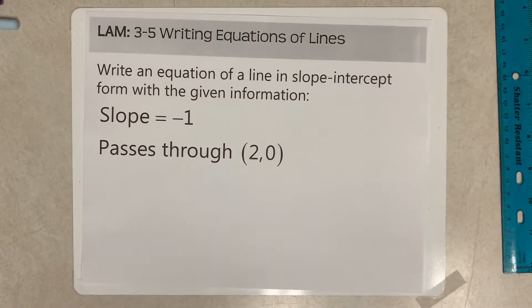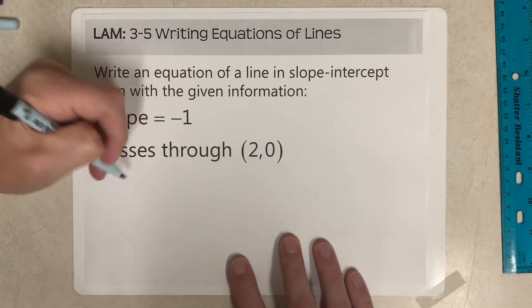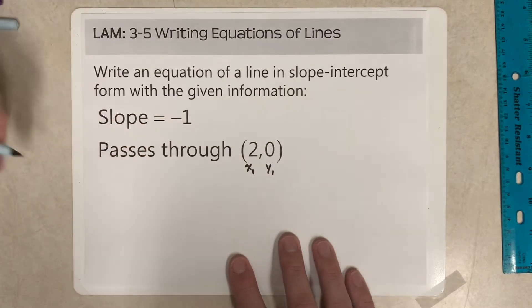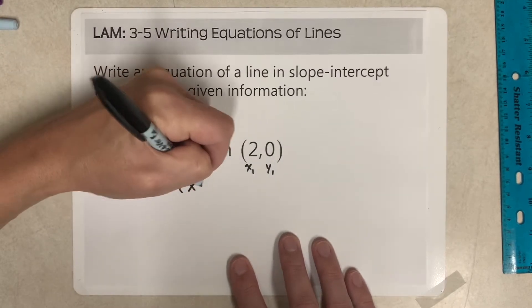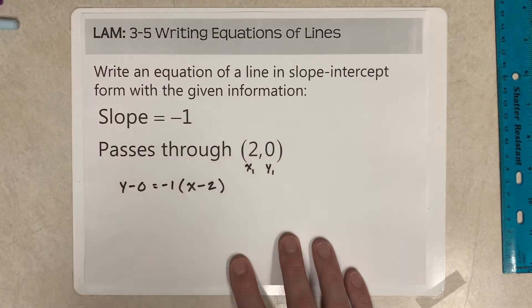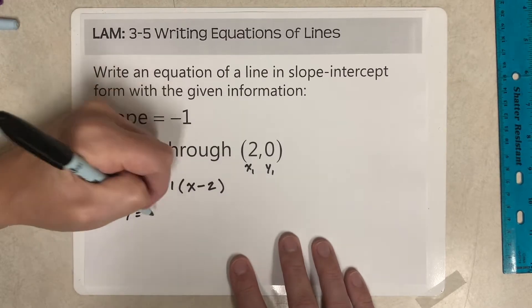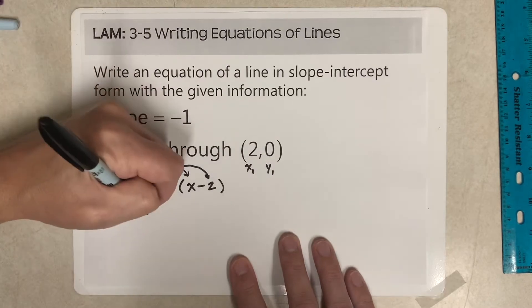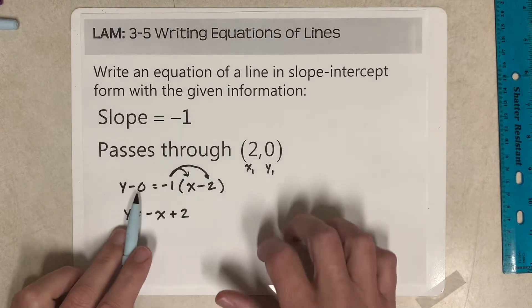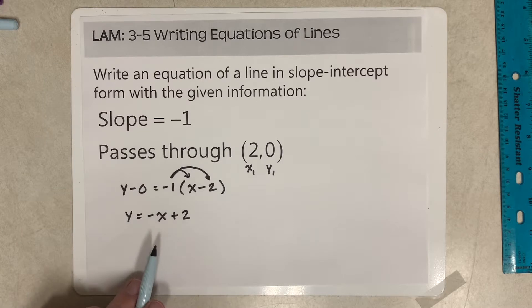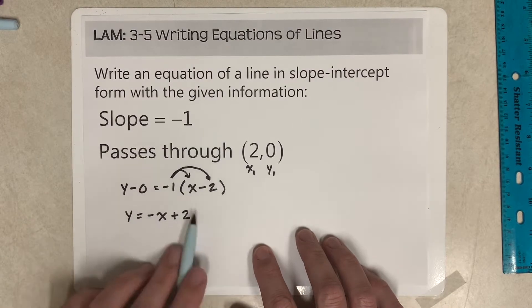Next example: slope of negative 1 passing through (2, 0). We've got y minus 0 equals negative 1 times (x minus 2). We don't even need the minus 0, so y equals negative x plus 2. Since your y1 was 0, we automatically don't need to move that constant over — we automatically get y right there, and this is done.